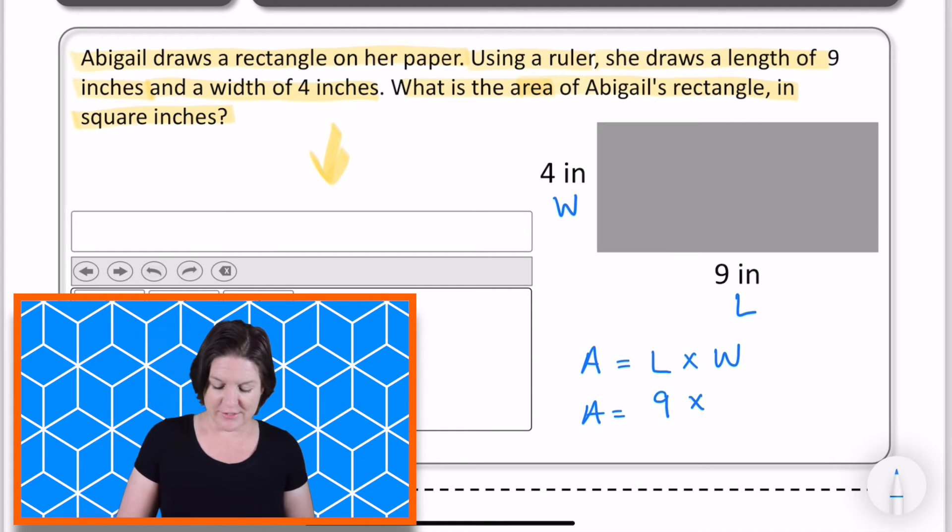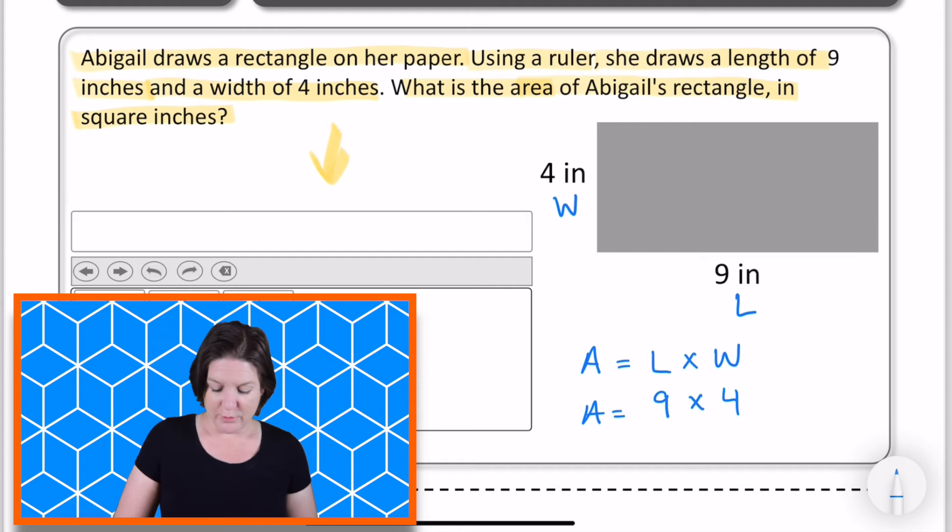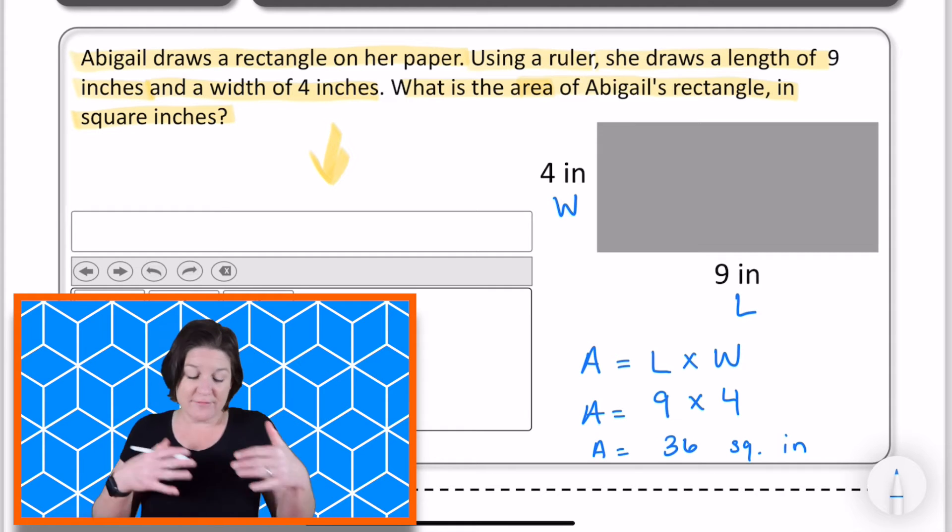We do. It's four inches. So now if we multiply nine inches times four inches, we can figure out that our area equals 36 square inches, 36 square inches.